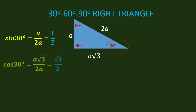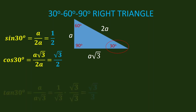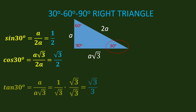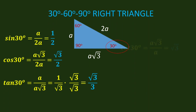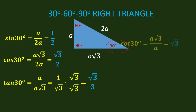Cosine 30 degrees is adjacent side over hypotenuse — that is, A square root of 3 over 2A. We cancel A, and we have square root of 3 over 2. Tangent 30 degrees is opposite over adjacent — that is, A over A square root of 3. We cancel A and have 1 over square root of 3. We need to rationalize the denominator by multiplying by square root of 3 over square root of 3. So we have square root of 3 over 3.